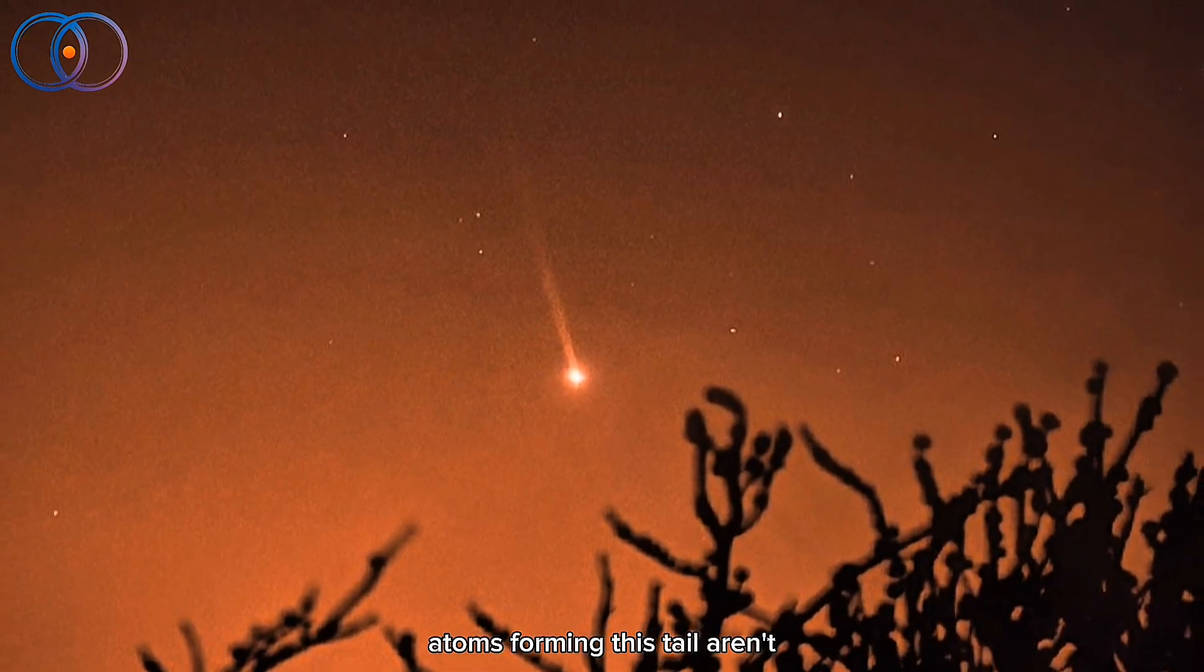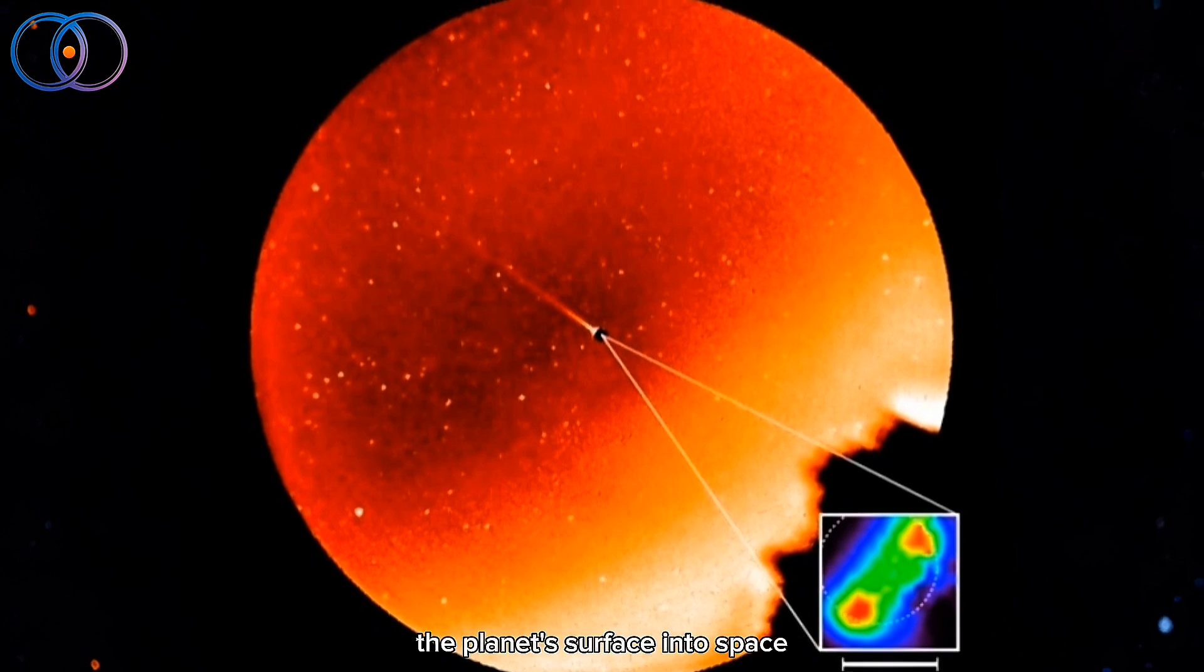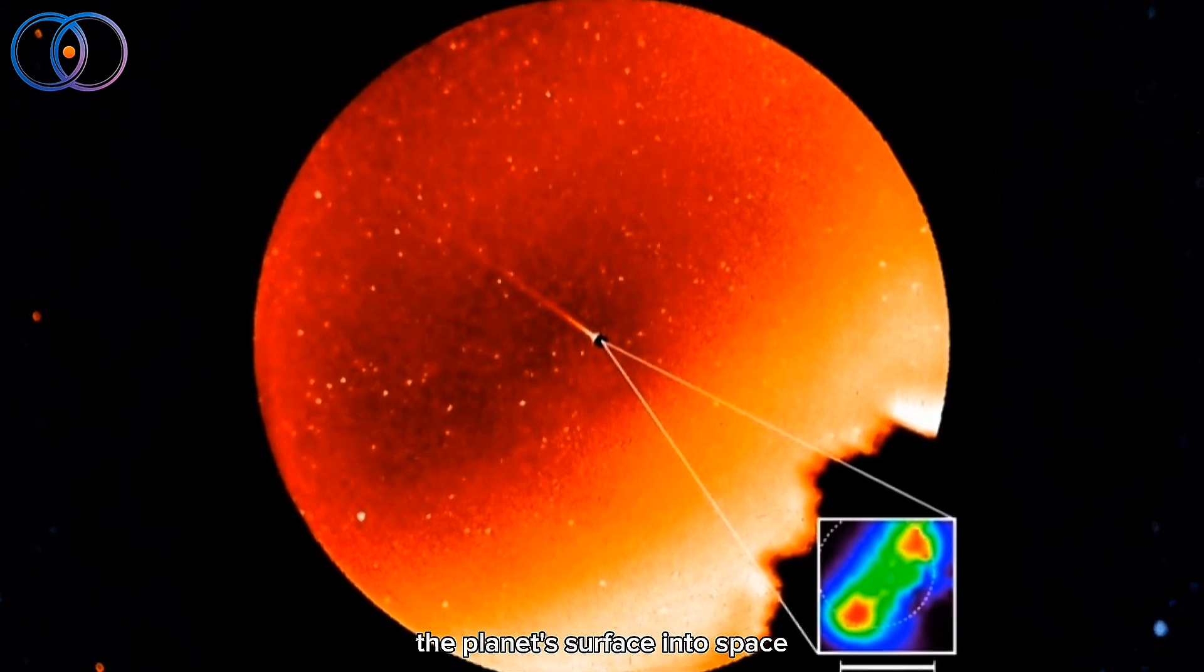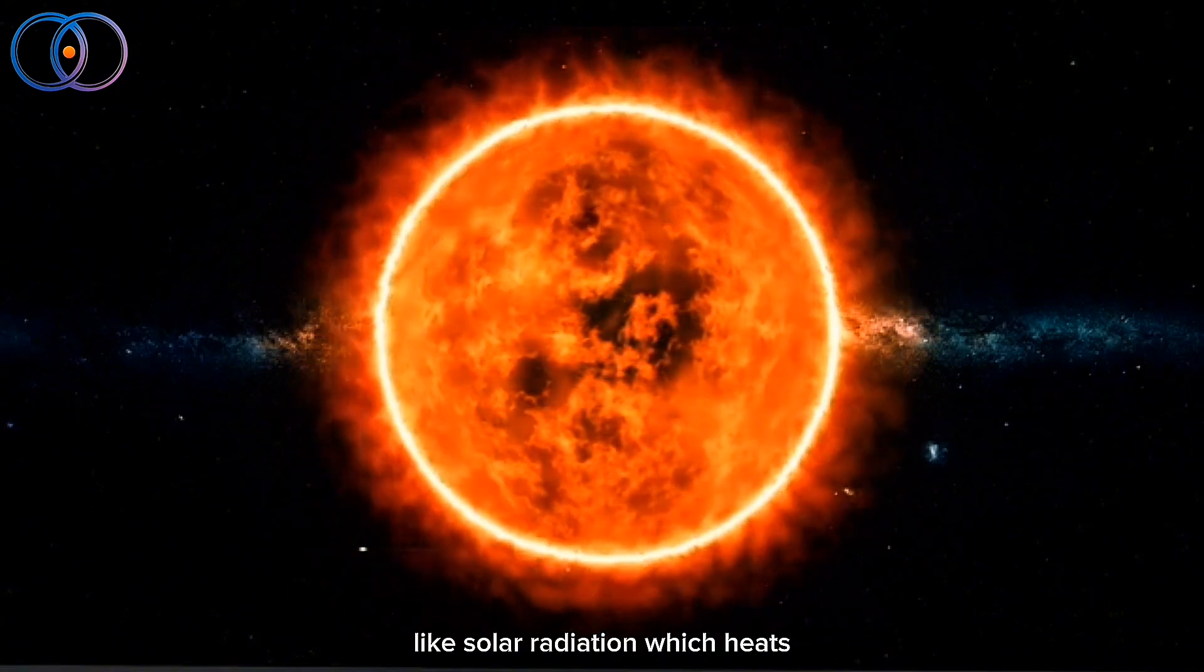The sodium atoms forming this tail aren't coming from deep inside Mercury, they're actually being ejected from the planet's surface into space. This happens because of intense forces like solar radiation, which heats up the surface, and high-speed micrometeoroids constantly bombarding Mercury.